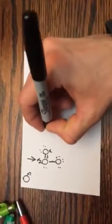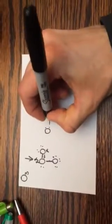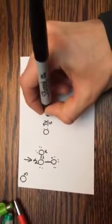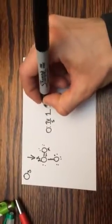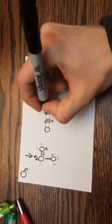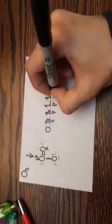So I have oxygen. It starts out with two in 2s. And it has six total, so four in p. One, two, three, four in the three p orbitals.